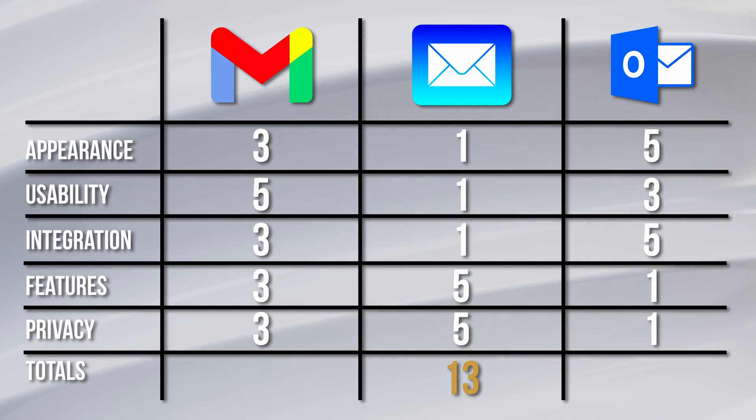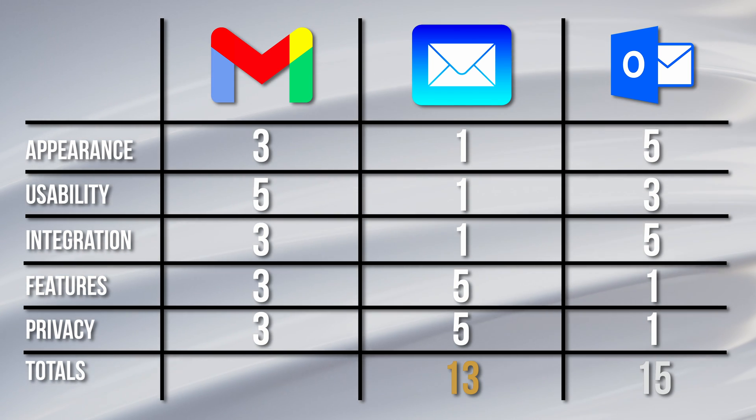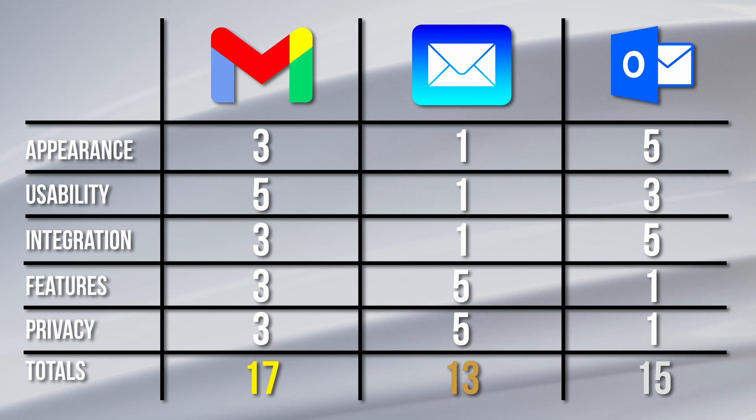So the final scores: Apple Mail rounds out the bottom with 13 points, Outlook comes in second with 15 points, and Gmail takes the crown with 17 points. That said, if you're exclusively an Apple user, Apple Mail would likely win in that context. Personally, even though I'm entirely in the Apple ecosystem, I use Gmail for my personal email and Outlook for work since we're on the Office 365 suite.